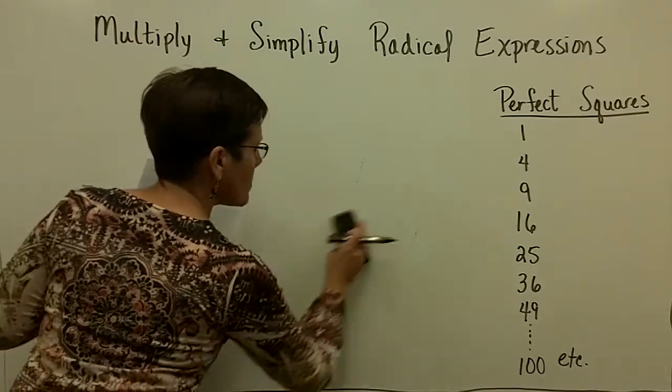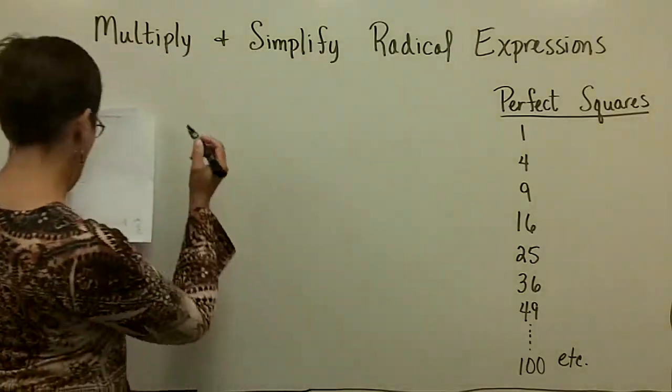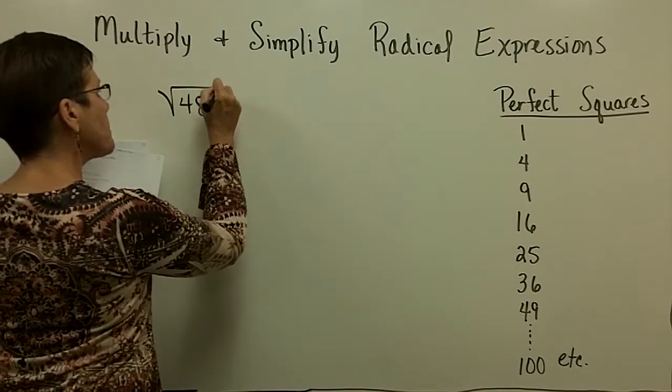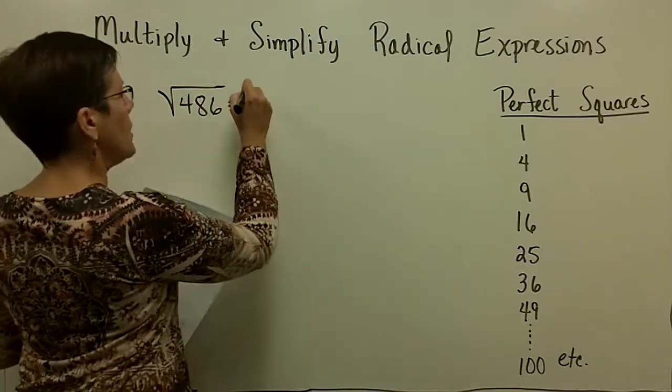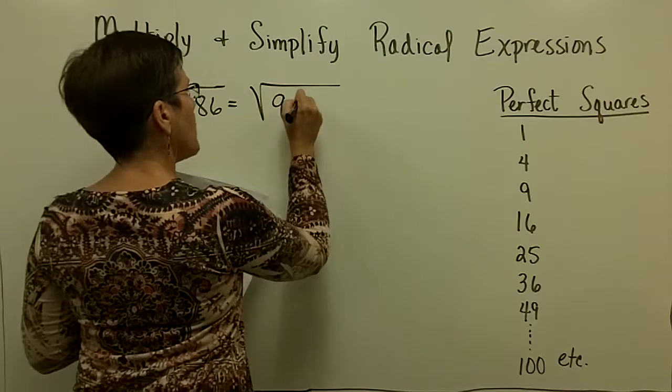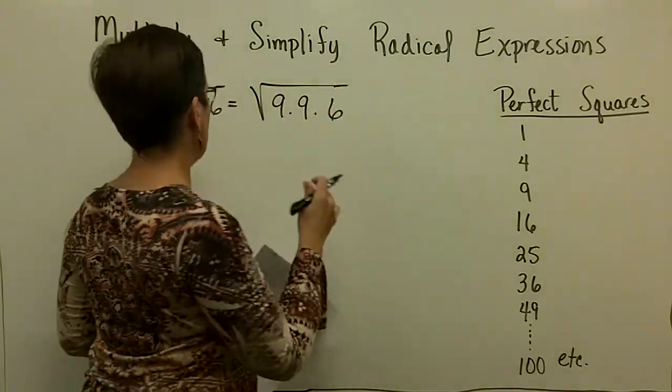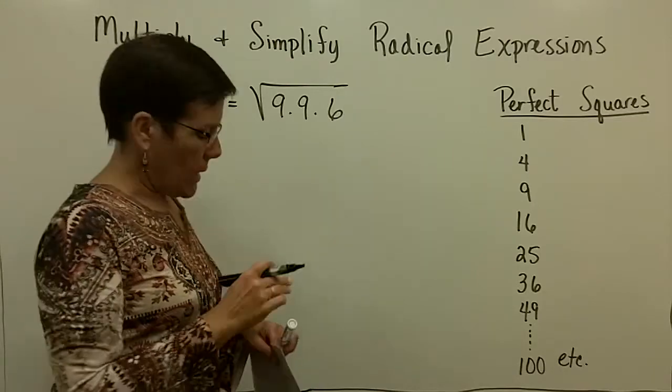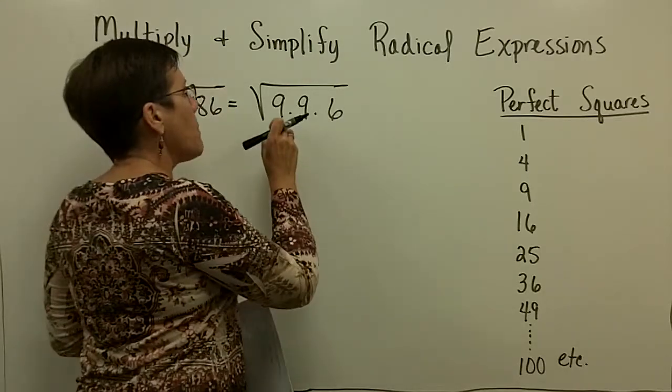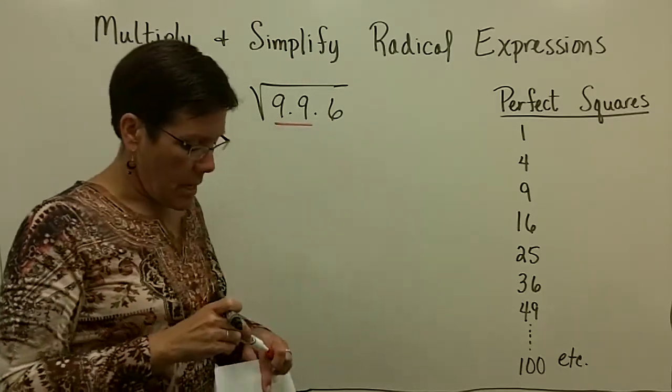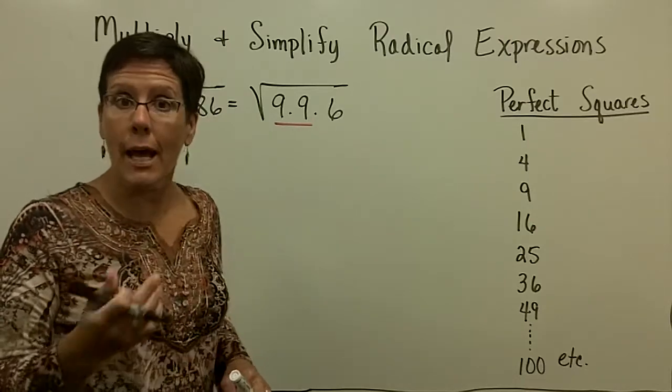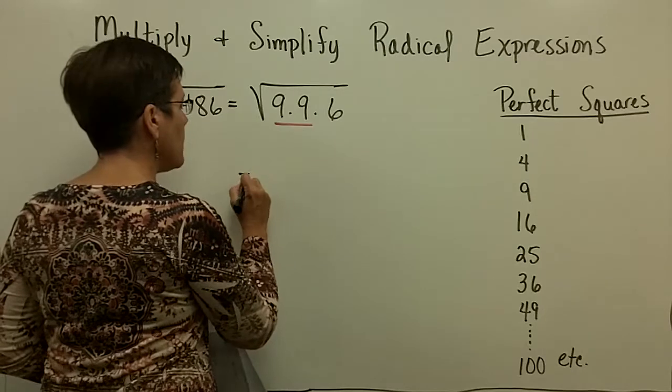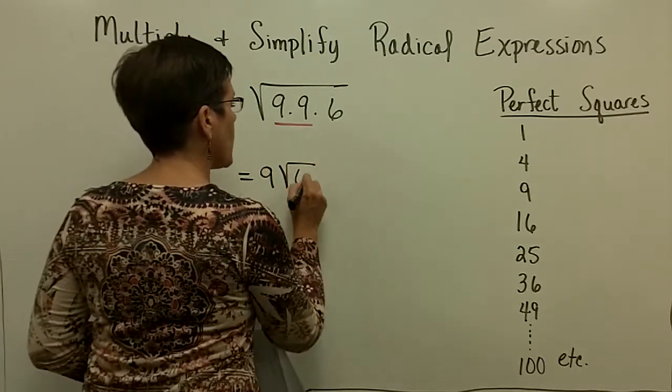486. Find this. Simplify the square root of 486. So when I first did this one, I think I noticed that 9 times 9 times 6 is 486. Those aren't primes yet, but it doesn't matter. I happen to have two pairs, and the square root of 9 times 9 is the square root of 81, which is 9. And so I have 9 times the square root of 6.